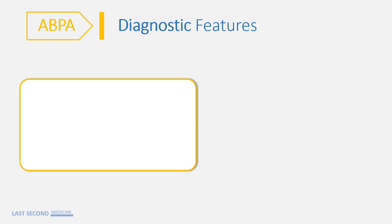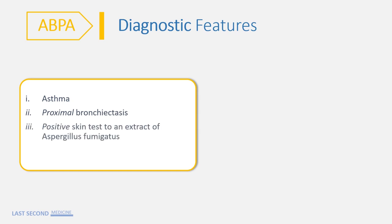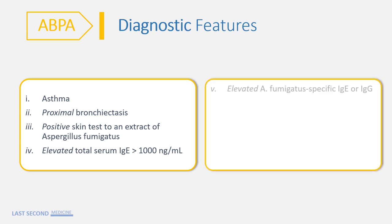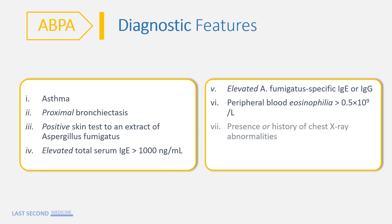Diagnostic features of ABPA include asthma in the majority of cases, proximal bronchiectasis, positive skin test to an extract of Aspergillus fumigatus, elevated total serum immunoglobulin E (usually more than 1000 ng/ml), elevated Aspergillus fumigatus-specific IgE or IgG antibodies, peripheral blood eosinophilia (more than 0.5 × 10⁹ per litre), and presence or history of chest X-ray abnormalities.